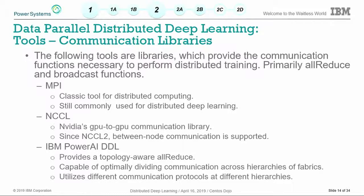Second on the list is NCCL — NVIDIA's GPU-to-GPU direct communication library. Since NCCL 2, it also supports inter-node communication. We also have IBM's PowerAI DDL, whose main offering is a topology-aware all-reduce. It uses MPI and NCCL underneath for communication but uses them at different times. Important note: these are just communication libraries — without any framework or tooling, you'd have to call into C code or Python wrappers directly.